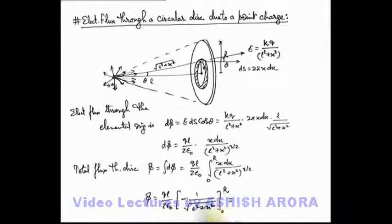And this can be written as ql by 2 epsilon not on integrating this expression we'll get it minus 1 by root of l square plus x square limits from zero to r. If we substitute the limits or we can just reverse the limits due to the negative sign present here. And if we take this l in the result will be q by 2 epsilon not, and this will be 1 minus l by root of l square plus r square.